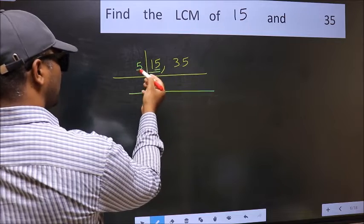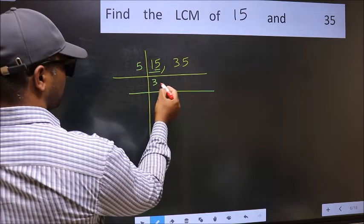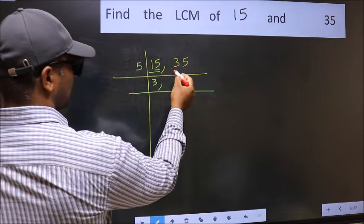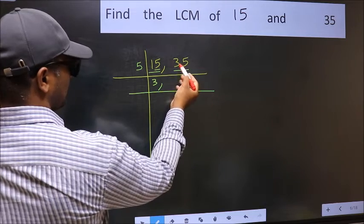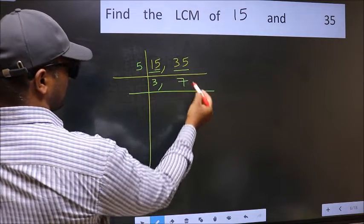When do we get 15 in the 5 table? 5 times 3 is 15. The other number is 35. When do we get 35 in the 5 table? 5 times 7 is 35.